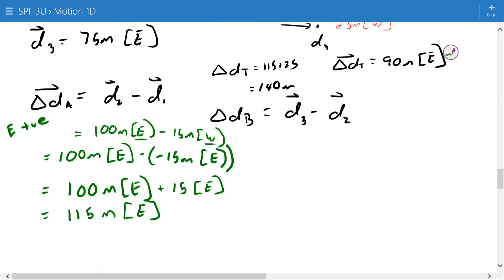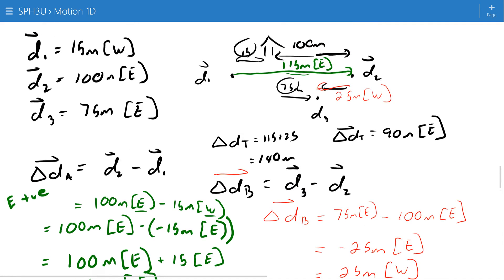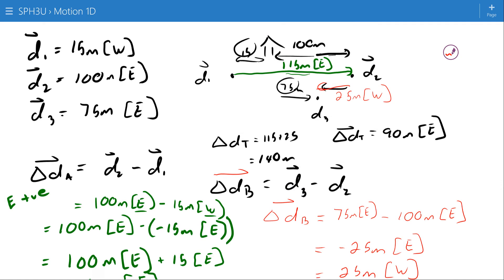And then in the secondary situation or delta D_B, I went from my 100 meters east to a position of just 75 meters east which works out to be negative 25 meters east. Or if you prefer 25 meters west, and that's what I'm showing here. So this is the first shot and the second shot.